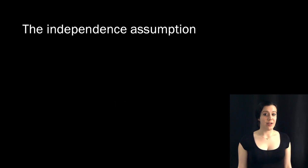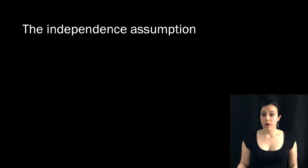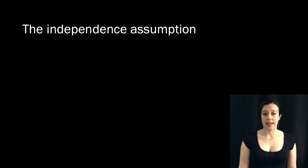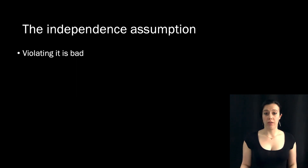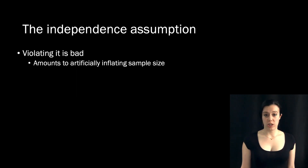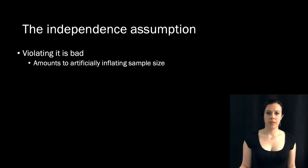Now I'm going to let you in on a little secret. It's usually okay if you violate the normality assumption or the homogeneity of variance assumption — regression is particularly robust to those violations. But regression and ANOVAs and those other statistical tests you've probably encountered are typically not robust to violations of the independence assumption. This is a big one. Violating it typically has much more dramatic effects on your inferences. If you don't account for the dependencies in your data, this essentially amounts to artificially increasing your sample size. If you assume independence when it's not there, you're overestimating the amount of independent pieces of information your data contain.